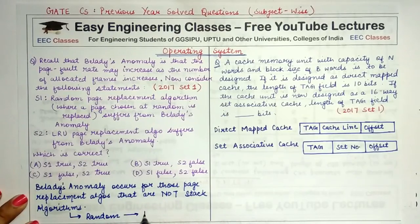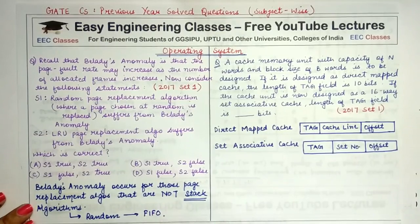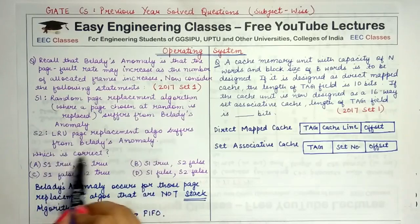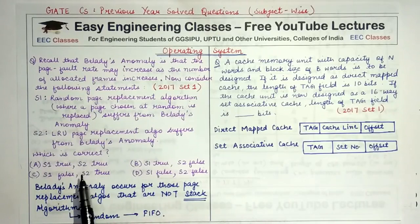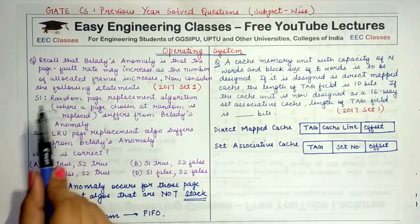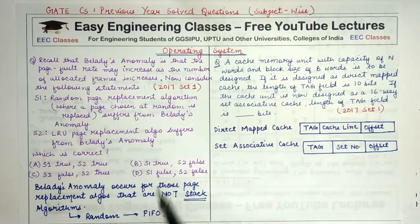For random page replacement: since the random algorithm may behave like FIFO in some cases, and random page replacement is not a stack algorithm, it may suffer from Belady's Anomaly. LRU, on the other hand, is a stack algorithm and will never suffer from Belady's Anomaly, so S2 is false. Options that say S2 is true are out. The answer is: S1 is true and S2 is false.